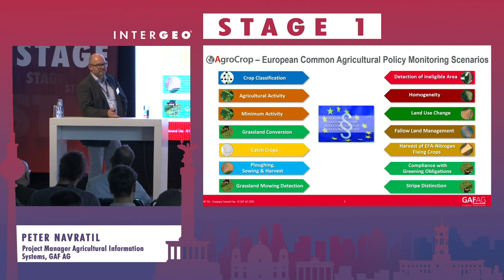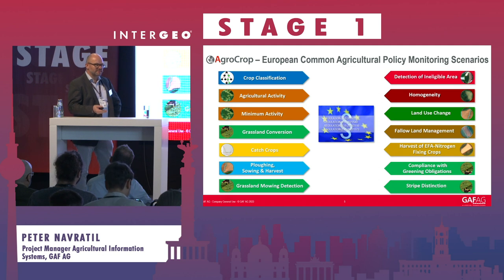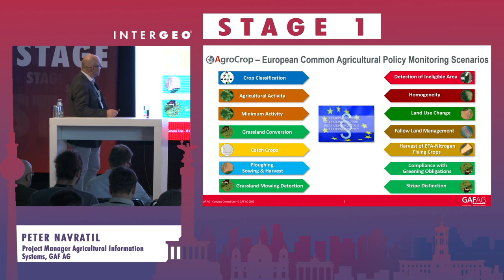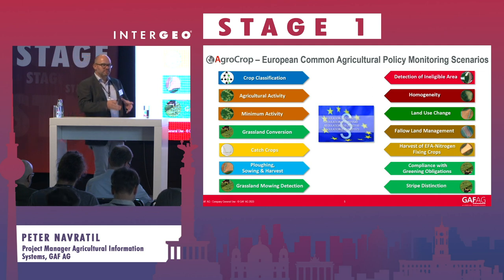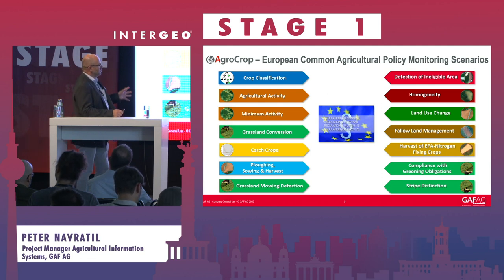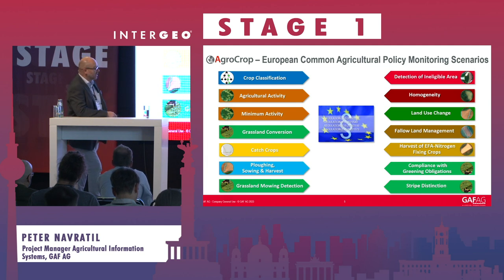Agricultural monitoring is not only about crops — there is also grassland, fallowland, and many different aspects for which farmers can apply for subsidies supported through the European Commission. You can see 14 of those on the slide, including grassland monitoring, mowing detection, the growing of catch crops, intercropping between two main crops, and more. Not all monitors are required by all member states, but within the AgroCrop product range we have a wide variety of monitors already in use, and this selection is also growing.